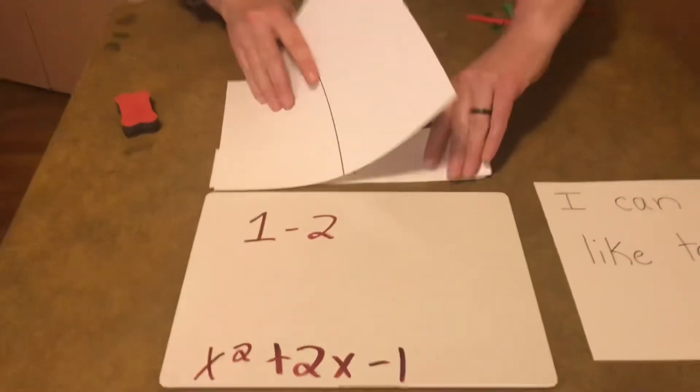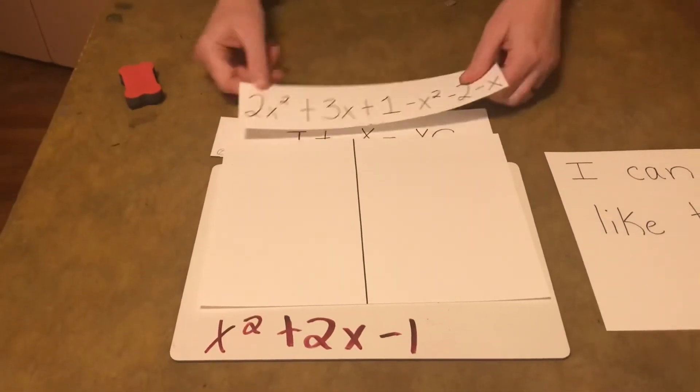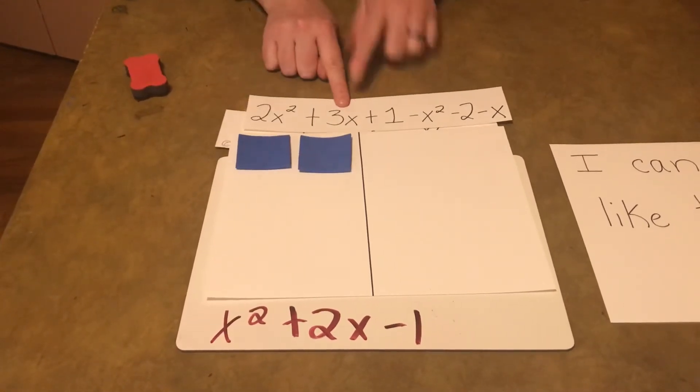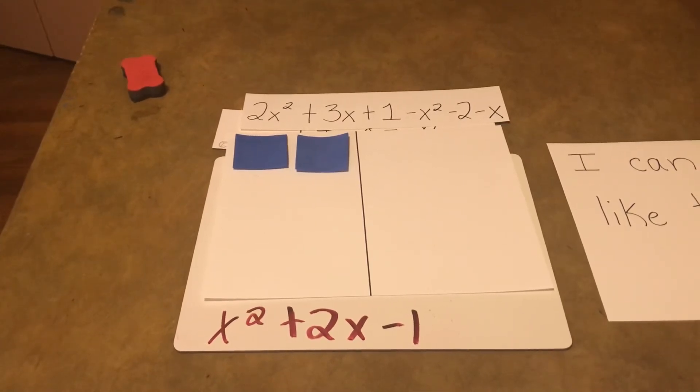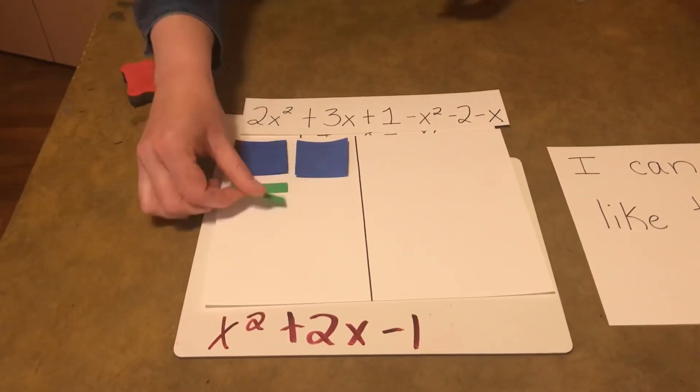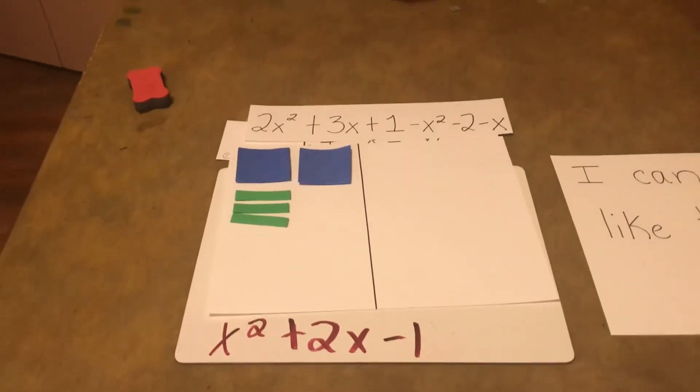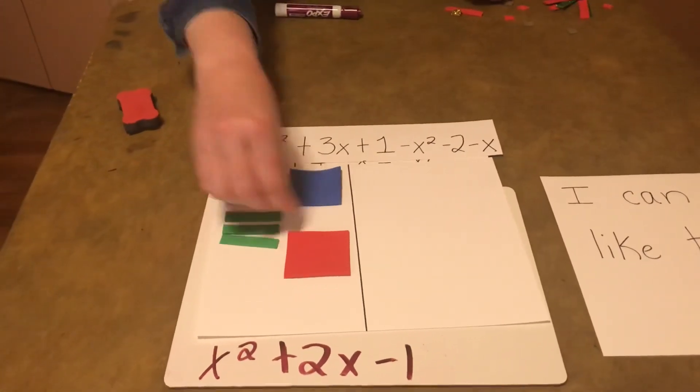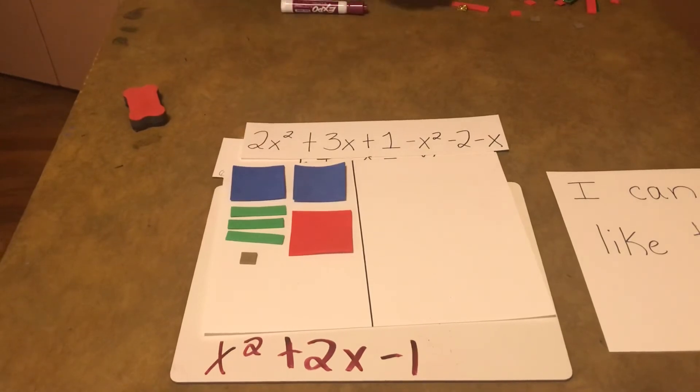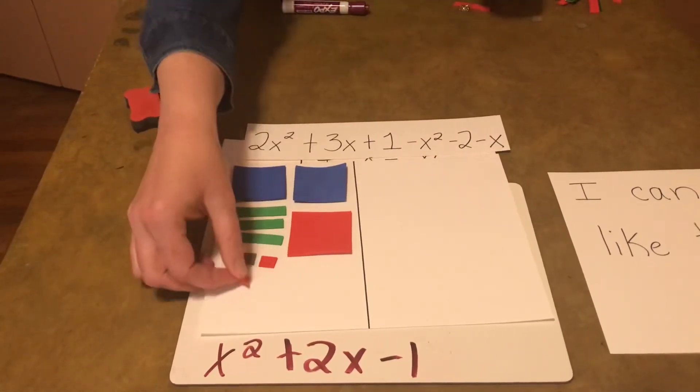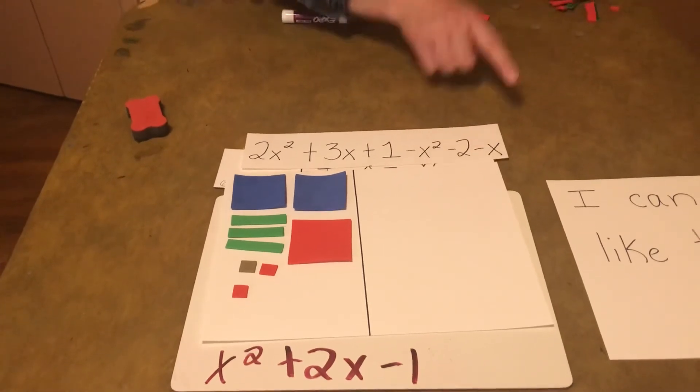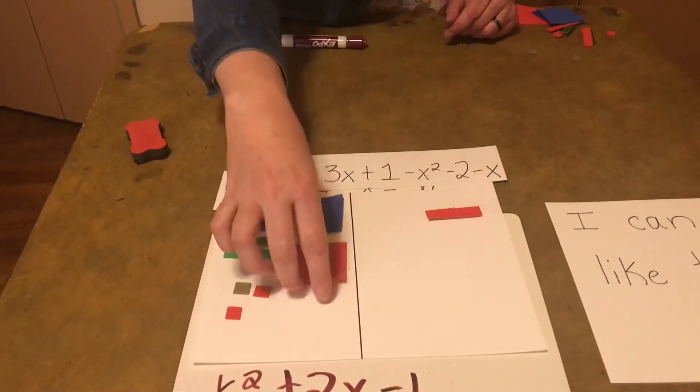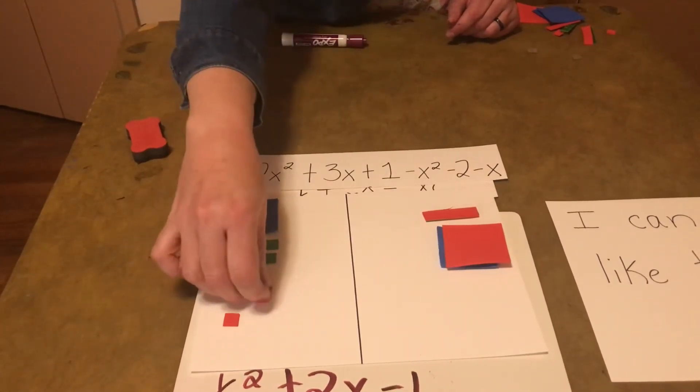So our original problem was right here. And here's our X squared. We had two of them. Plus 3X. We had three of our X's. Plus 1 minus X squared or negative X squared minus 2 and our negative X. So now we're just going to zero them out. We know that these cancel out or zero out. We know that these zero out. And we know that those do. So let's see.